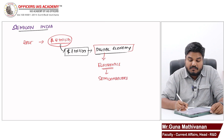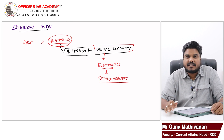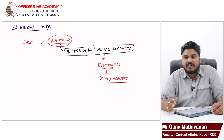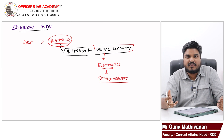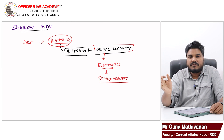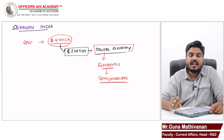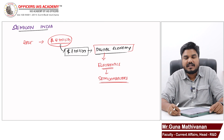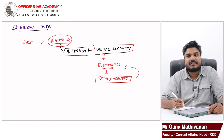Semiconductors are the building block of electronics. A semiconductor is a substance which will conduct electricity, and by adding impurities to that substance we can vary the flow of current — we can increase or decrease it. Such substances are called semiconductors. Silicon, germanium, etc. are all semiconductor substances.